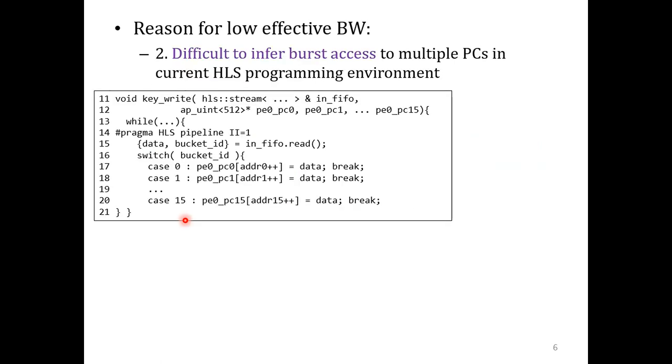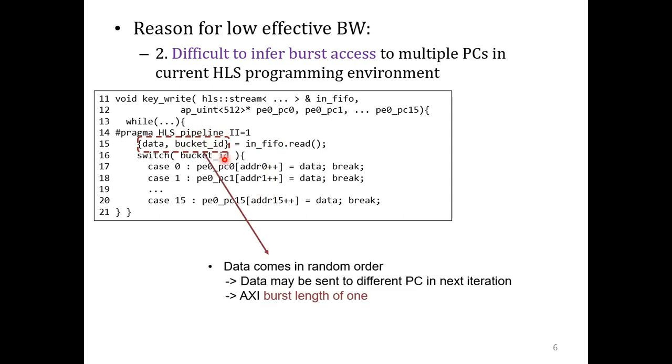The second reason can be found in the limited HBM support in HLS. This is the code from bucket sort, where each bucket is stored in a PC. We can see in lines 15 to 20 that the input is being sent to a bucket depending on the incoming data's bucket ID. The problem is that the data may come in any random order, and the data may be sent to a totally different PC in the next iteration.